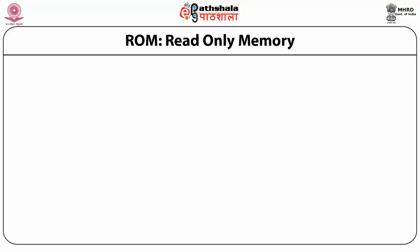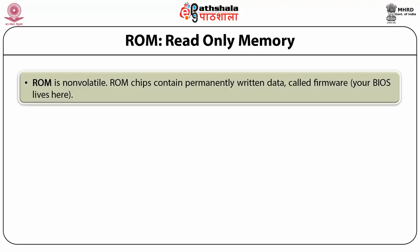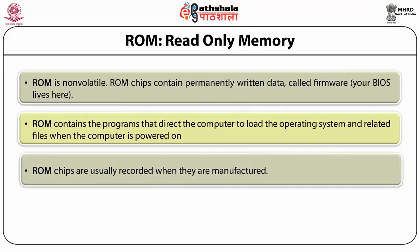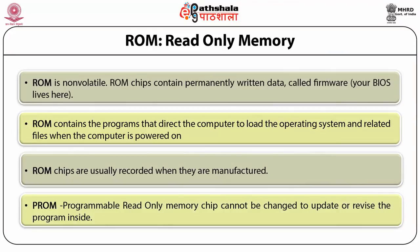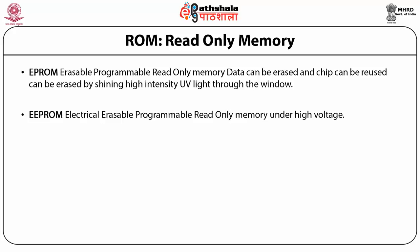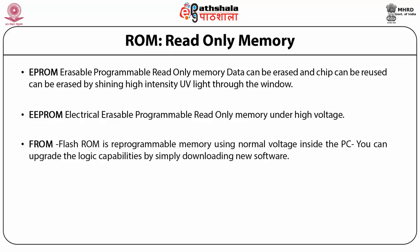ROM is non-volatile; ROM chips contain permanent written data called firmware and direct the computer to load the operating system when powered on. ROM chips are usually recorded when manufactured. Programmable read-only memory chips cannot be changed to update the program inside. EPROM — Erasable Programmable Read-Only Memory — can be erased by shining high-intensity ultraviolet light through a window, allowing chips to be reused. EEPROM — Electronic Erasable Programmable Read-Only Memory — can be erased through high voltage. Flash ROM is reprogrammable memory using normal voltage inside the PC, allowing logic capabilities to be upgraded by simply downloading new software, saving the expense of replacing circuits.